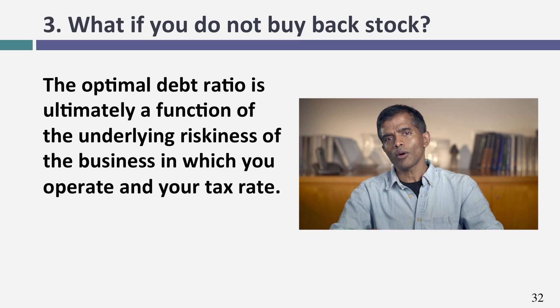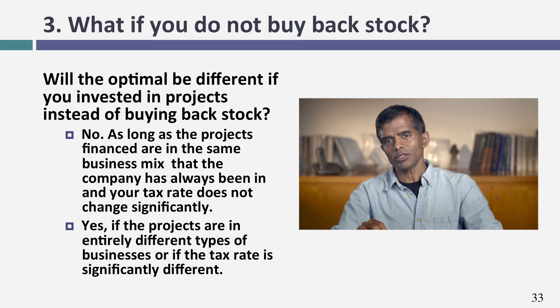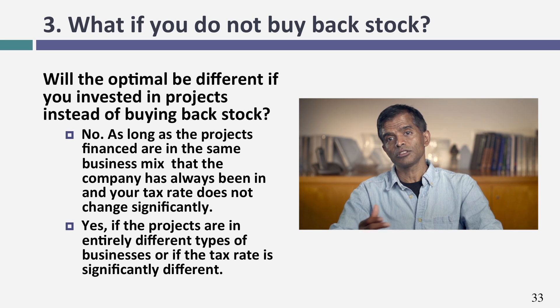This brings us to the third and final question. The entire process assumes borrowing $39.1 billion and buying back stock, but Disney has big plans. Will the optimal be different if they take projects instead of buying back stock? The easy answer is no — your optimal will be unchanged if you remain in the same businesses. If Disney expands broadcasting or builds another theme park in the same business mix, the optimal still carries at 40%. But if they expand into technology or interactive gaming — high-risk, negative cash flow businesses — the optimal will go down. You can't give companies blank checks; you need to know what they're investing in.